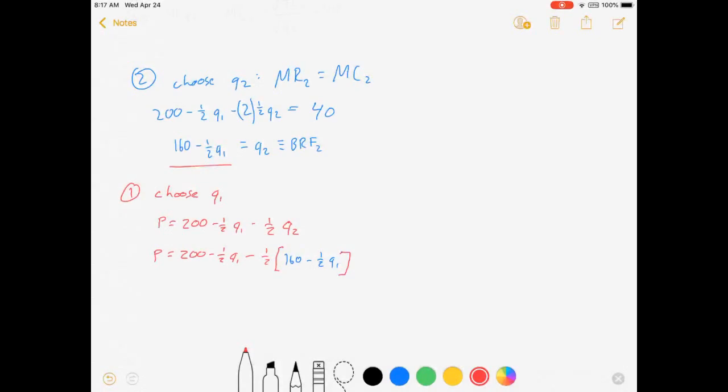So firm one, knowing that whatever it chooses, firm two will respond with 160 minus one-half Q1, can substitute that into its demand function. And let's simplify it one last time. That's going to be, I'm going to skip a couple of little algebra steps. We're going to get 120 minus one-fourth Q1. And this is what's called a residual demand function. This is the demand function that's left after we solve out Q2, basically.